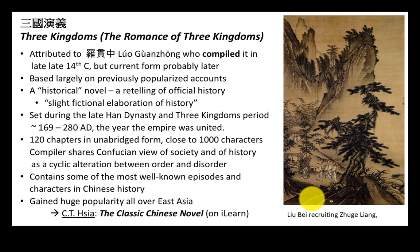Something we will talk about in more detail next week is the fact that the novel reflects Confucian views of society as they were prevalent in the 14th century. This is interesting because even though these events are set during the Han Dynasty in the 2nd and 3rd century, we really have to think of the novel in many ways as a reflection of the prevalent political and philosophical ideas of the 14th century. We'll talk more about that in detail.